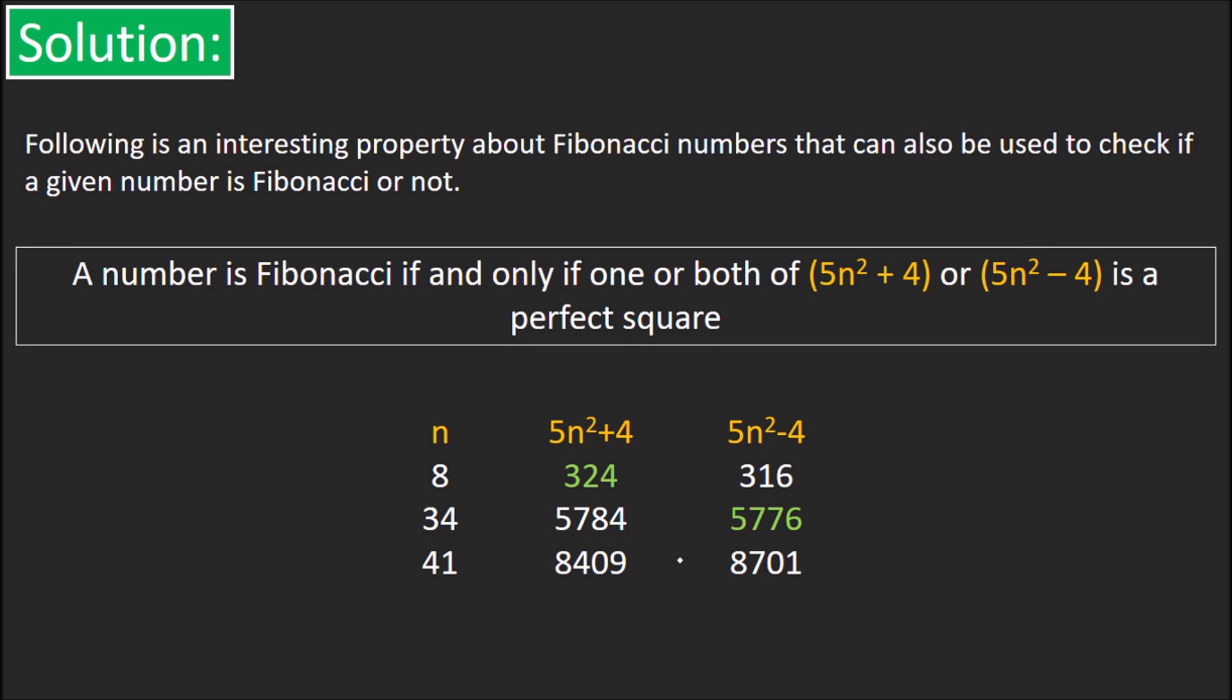Let's look at the solution. This actually an interesting property that can be used to check if a given number is Fibonacci or not. A number is Fibonacci if and only if one or both of 5n² + 4 or 5n² - 4 is a perfect square. This is actually obtained by rearranging Binet's formula which is used to calculate nth Fibonacci number.